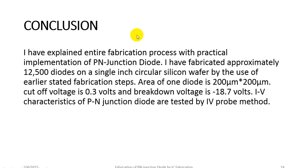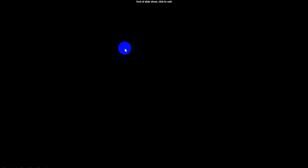In conclusion, I have explained the entire fabrication process with practical implementation of the PN junction diode. Approximately 12,500 diodes were fabricated on a single-inch circular silicon wafer using the described fabrication steps. The area of one diode is 200 µm × 200 µm. The cutoff voltage is 0.3V and the breakdown voltage is −18.7V. The IV characteristics of the PN junction diode were tested by the IV probe method. Thank you.